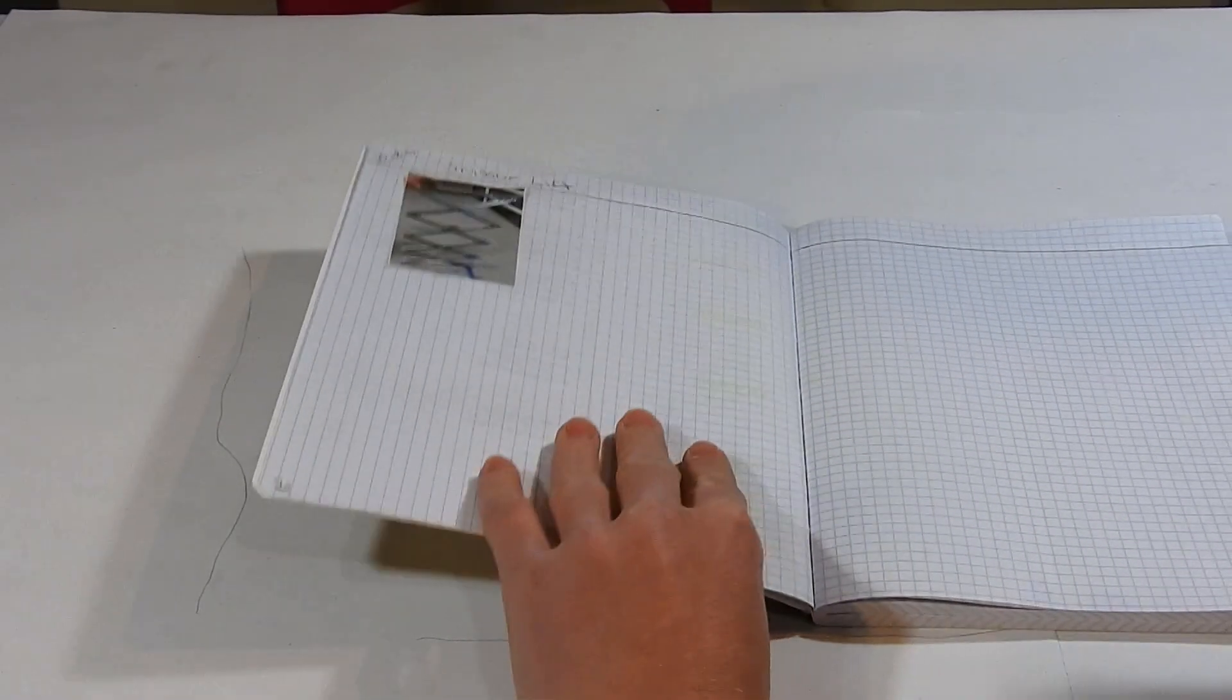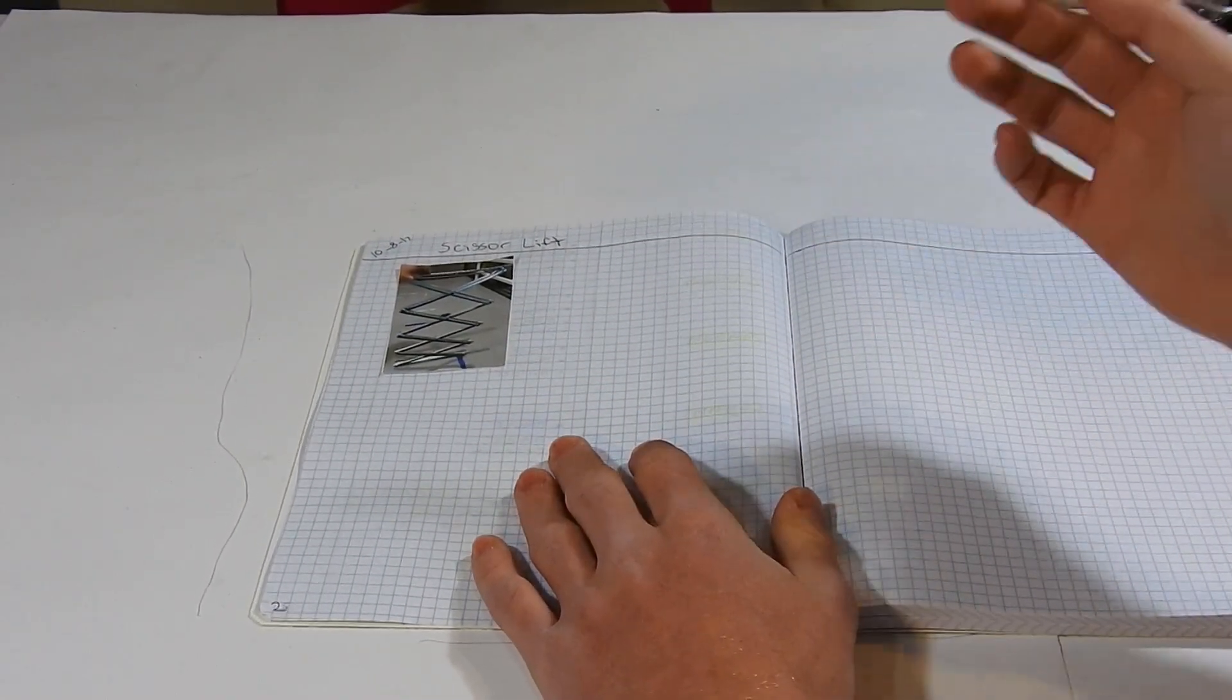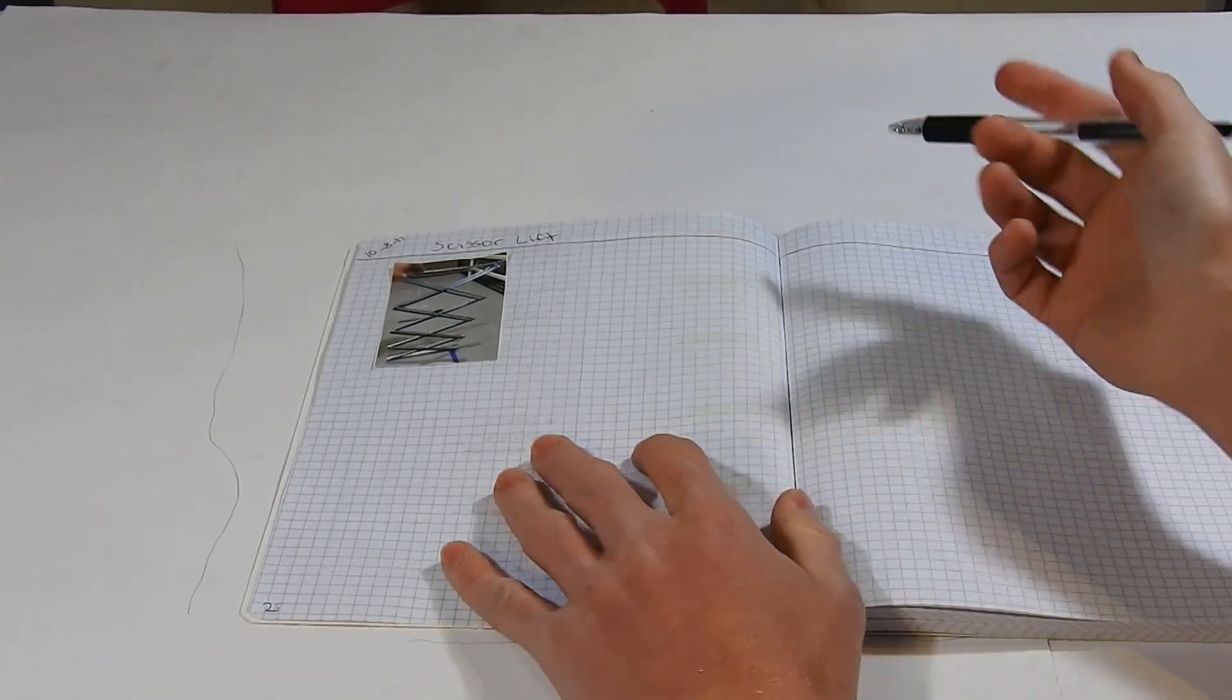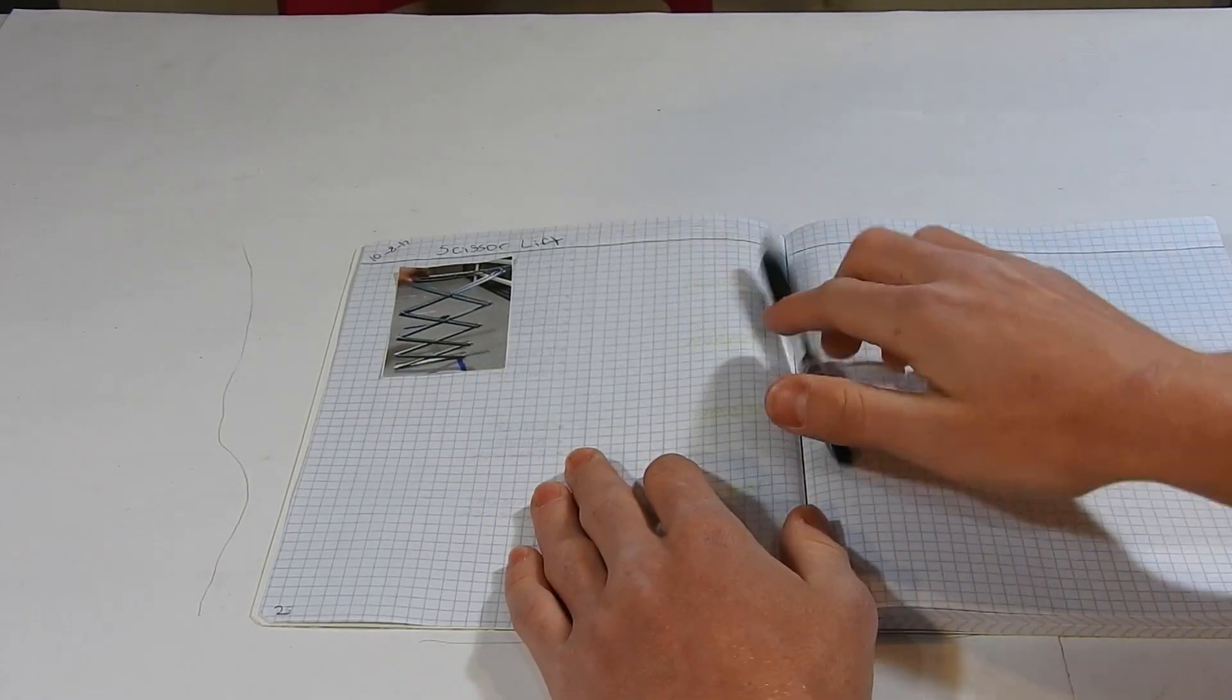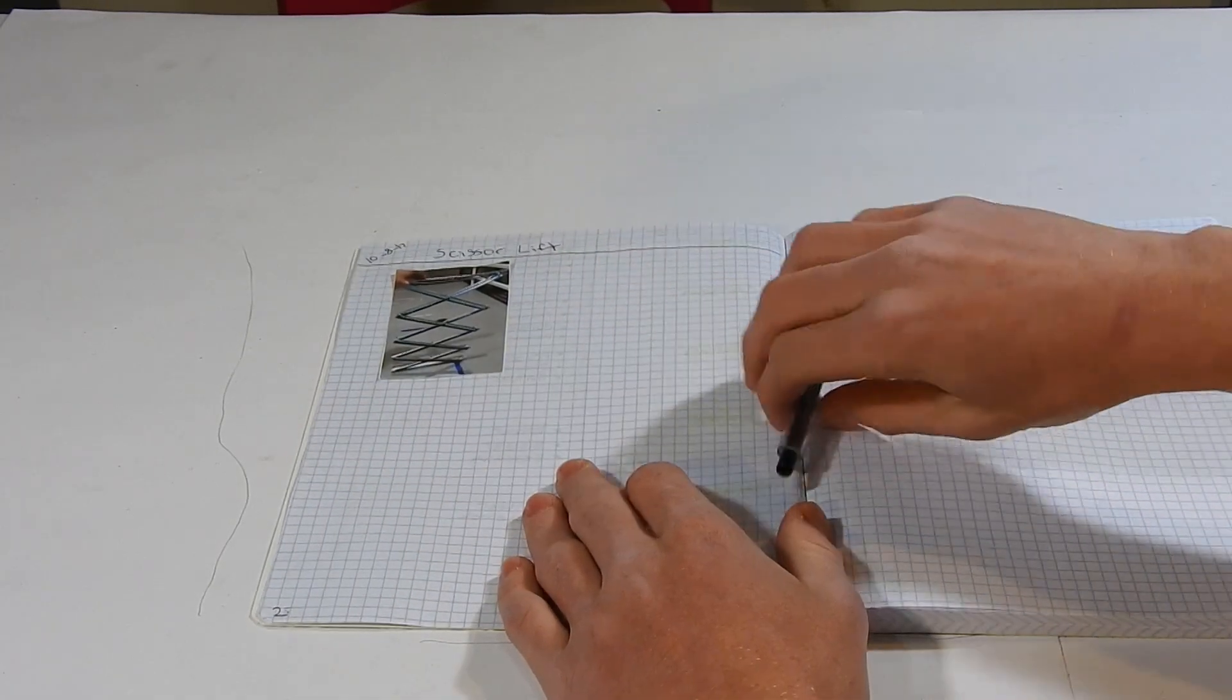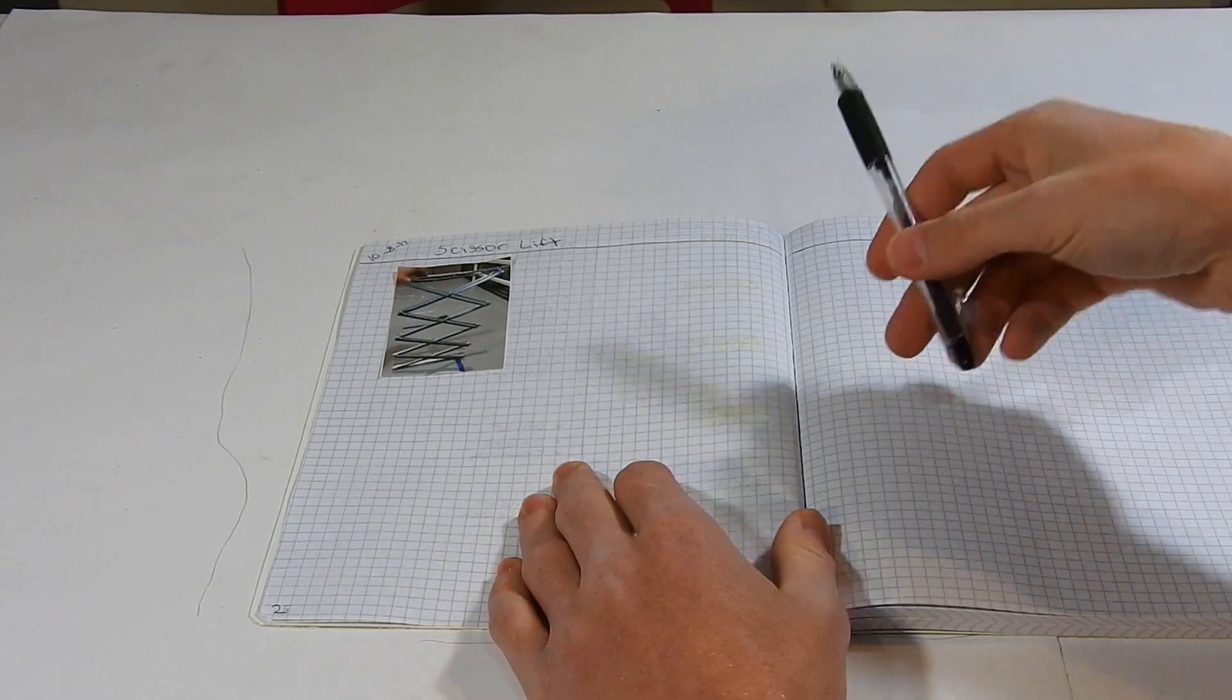Now that you're ready to make your first real project page, you're going to start by titling it and dating it. Since I'm working on my scissor lift as an example, I wrote down scissor lift. Next, you're going to want to either print out and paste in or tape in a picture of what you did, or you can even draw a picture of what you did, or you can do both. It's all up to you.